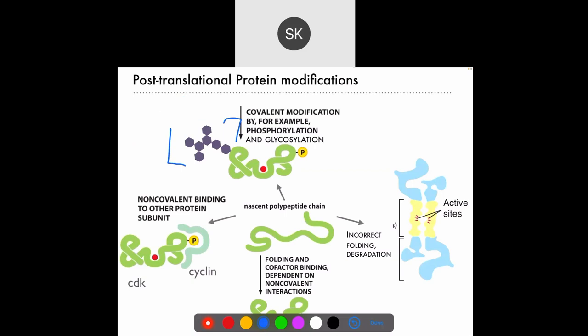Moving on to non-covalent modifications — an example of this is binding to other proteins. Here we see a CDK, or cyclin-dependent kinase, binding to its appropriate cyclin. These are two proteins we talked about in mitosis that signal the cell is ready to move forward in the cell cycle. CDK and cyclin participate in non-covalent binding because these two proteins don't share electrons — they can bind and then disengage or dissociate as part of their function.